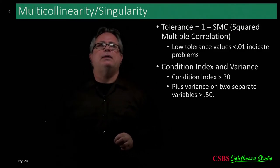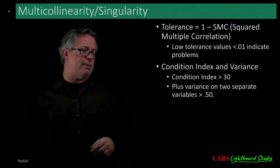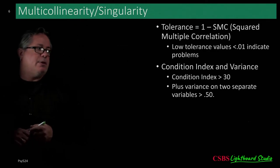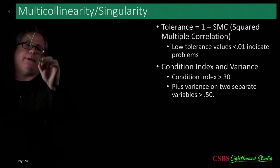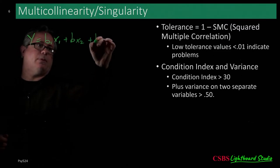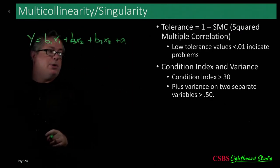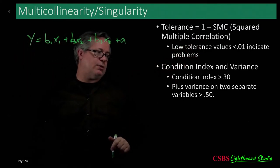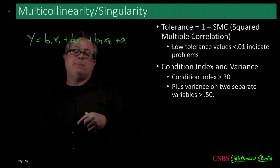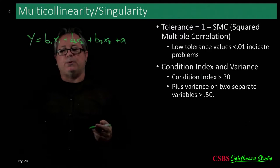With tolerance, let's say you have a Y and several predictors. What tolerance does is — for a moment — forget about Y. We want the predictors not to be redundant. So we take each predictor and predict it from the other predictors: X1 is predicted by X2 and X3, X2 is predicted by X1 and X3, and X3 is predicted by X1 and X2. We get a multiple correlation for each.